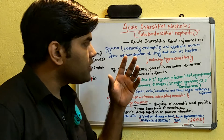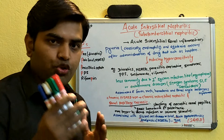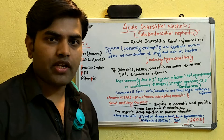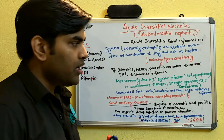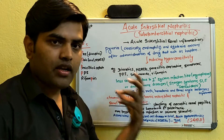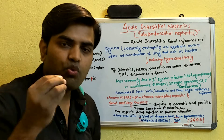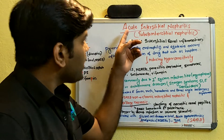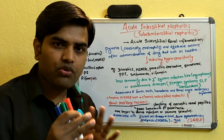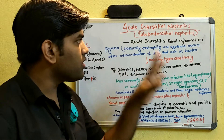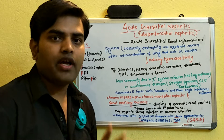Today we will be discussing acute interstitial nephritis, which is totally different from acute tubular necrosis covered in the previous lecture. Although some causes overlap, such as ischemic and nephrotoxic drugs, the conditions are distinct. Both acute tubular necrosis and acute interstitial nephritis — also known as tubular interstitial nephritis — are causes of acute renal failure, but they should not be confused with each other.